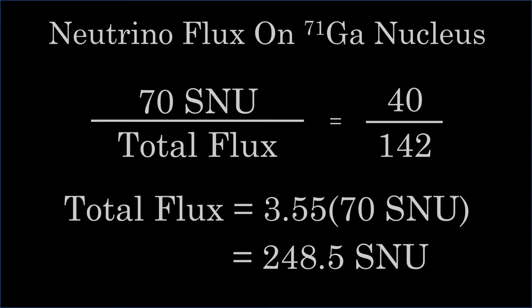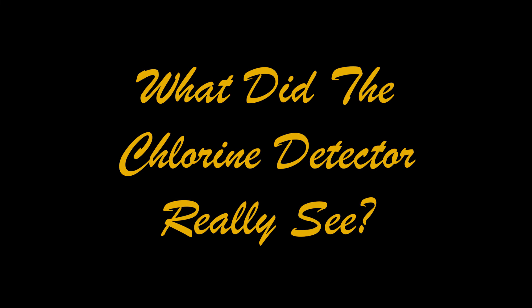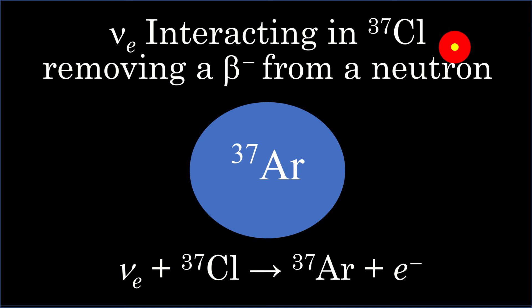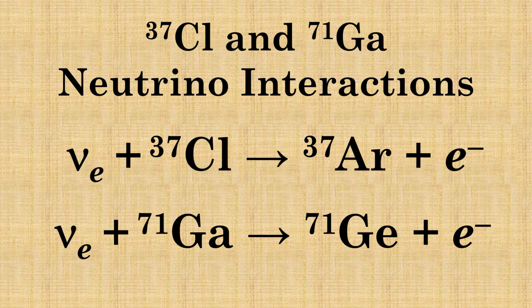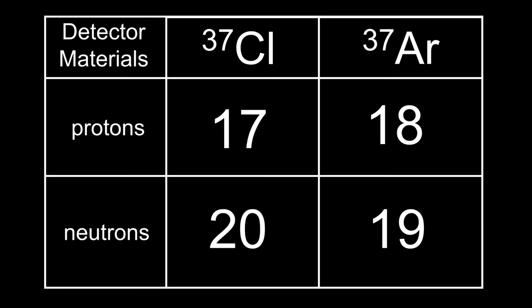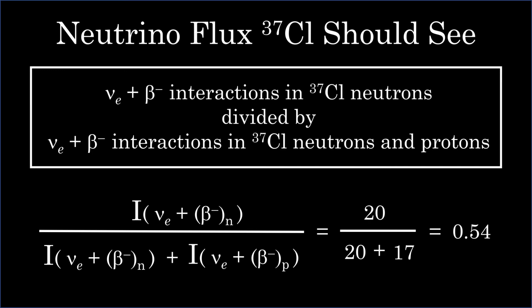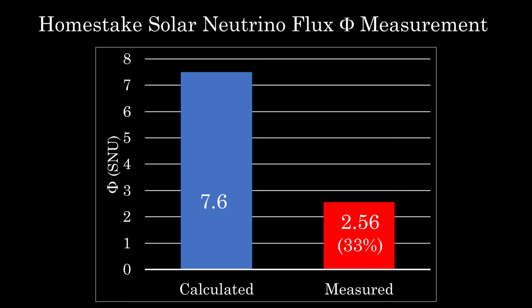Like the gallium detectors, the chlorine detector relies on the electron neutrino to convert a stable isotope — chlorine-37 — into radioactive argon-37 by coupling with a beta electron. Since the reaction is similar to the gallium-71 reaction, one might expect a similar measurement result. There are 37 nucleons in chlorine-37, and 20 of them are neutral. Therefore, the detector should see 20 out of every 37 interactions, or 54% of the predicted solar neutrino flux. However, the Homestake detector only measured about 33% of the predicted flux.